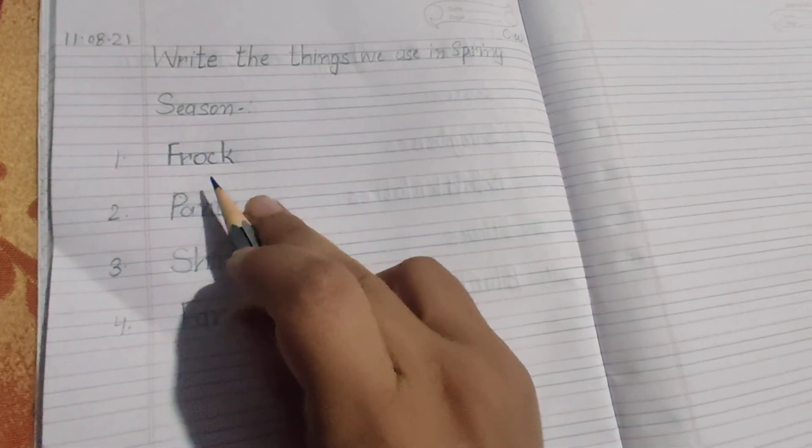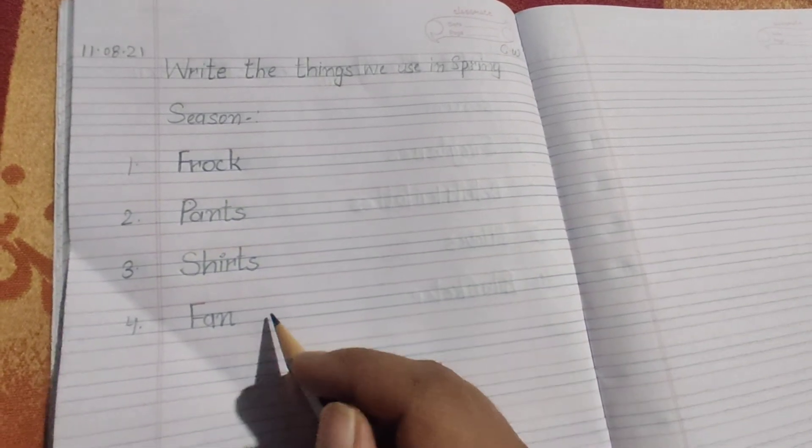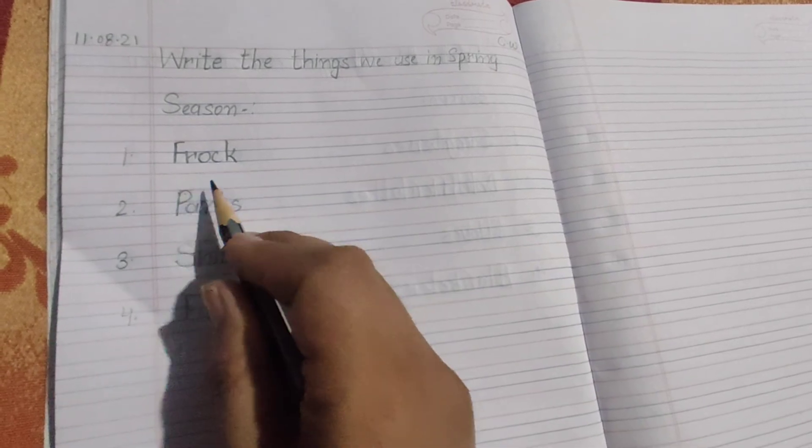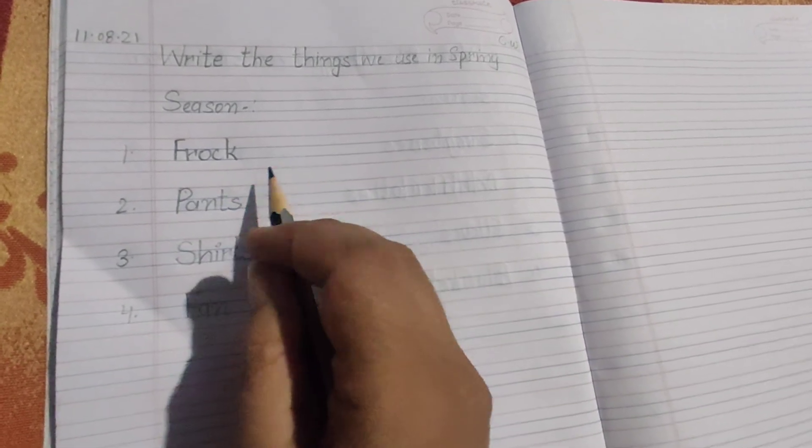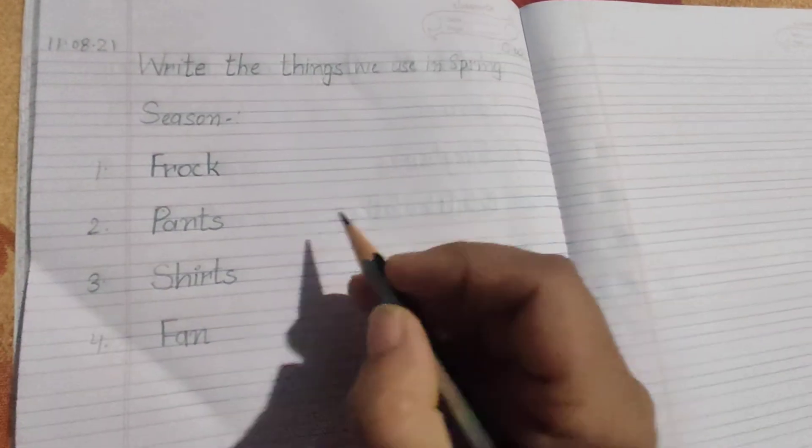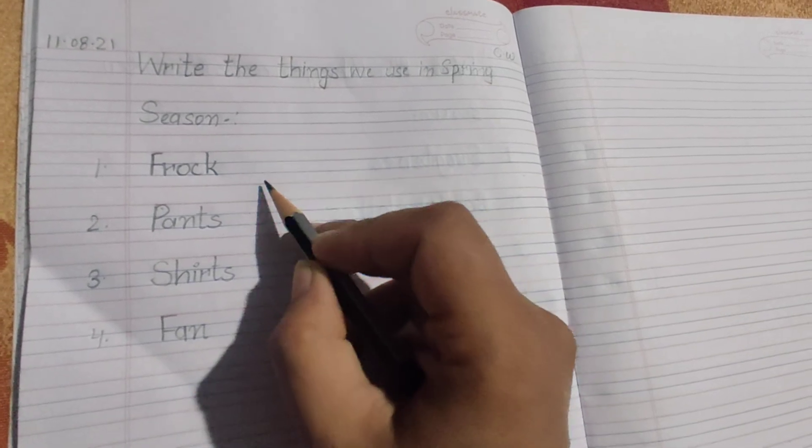So first you will just speak the spellings, learn it properly. And then you will write it down in your notebook. Make the first letter capital and the others will be small. Write it down in very neat and clean handwriting children and in proper formation. Don't forget that you have to write in these four lines only from red to blue.